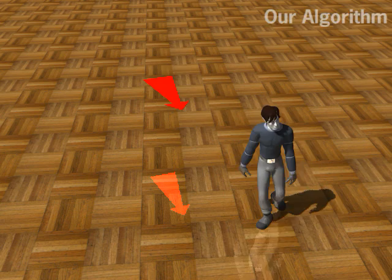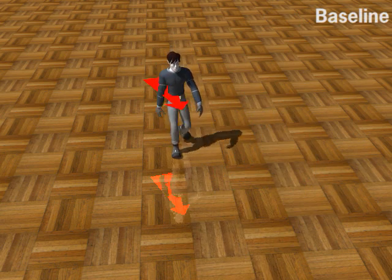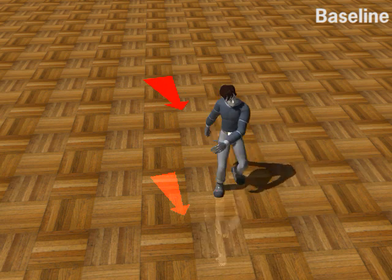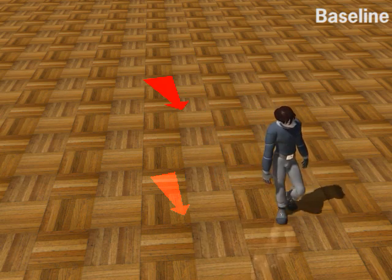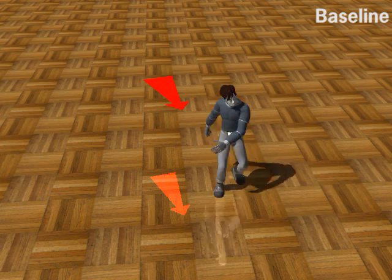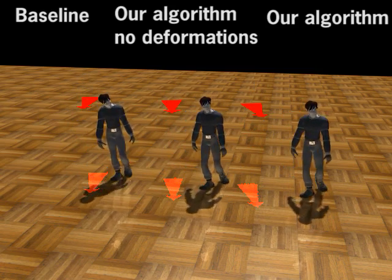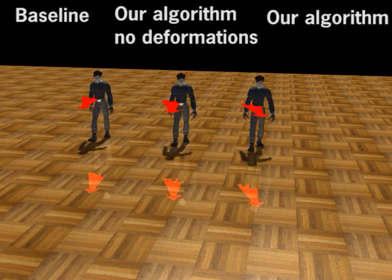We compare to a baseline algorithm that picks an example by checking that the push is numerically close and the cut from the original motion to the response is small. This often creates motions that respond to the wrong push. The baseline response is on the left, and our method is on the right. Our method responds better to the actual push.